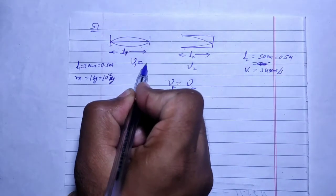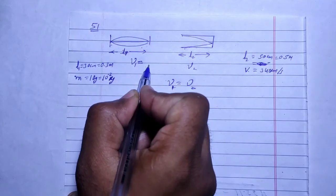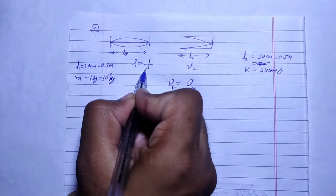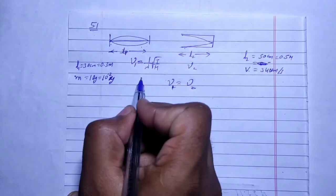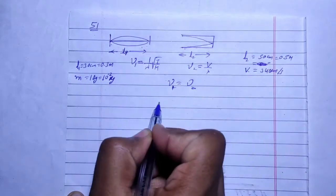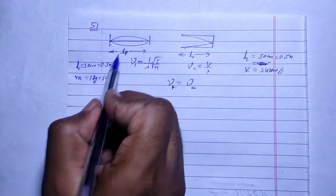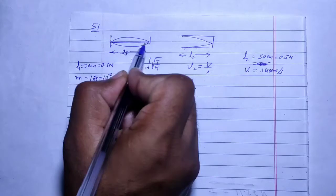To find frequency, we use speed by wavelength, which equals root T by mu times one by wavelength. Mu is mass per length. For the wire, the wavelength - this path difference is lambda by 2, right? Lambda by 2 equals L1.